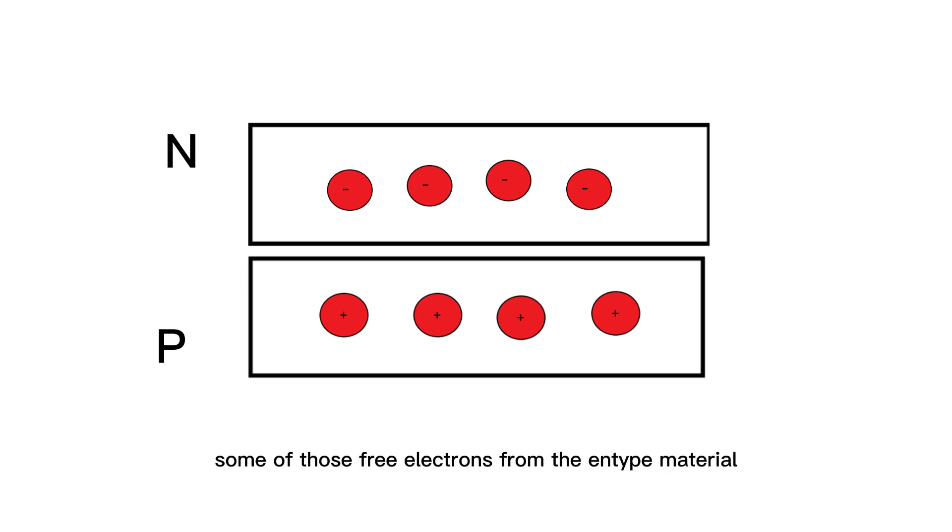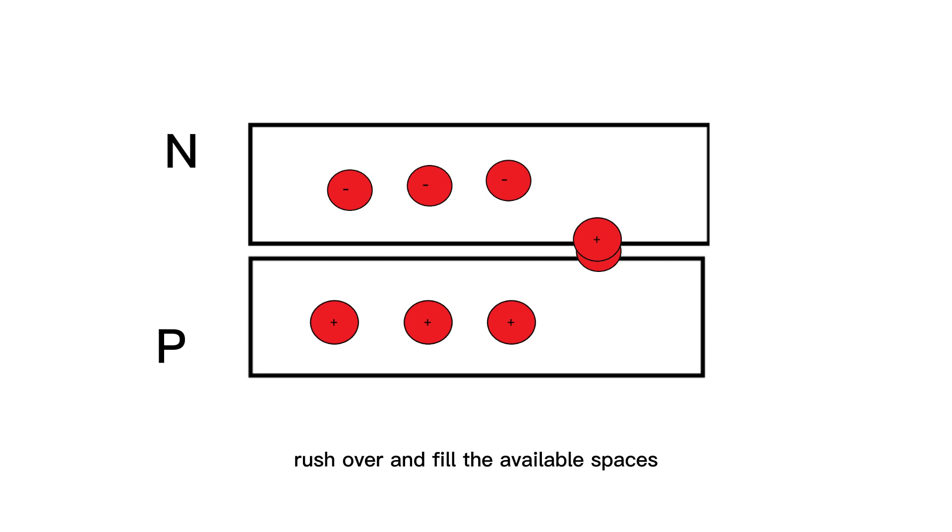As you do so, some of those free electrons from the N-type material rush over and fill the available spaces, which we call holes, in the positively charged material. This process, recombination, creates a neutrally charged region between the two materials.